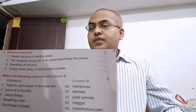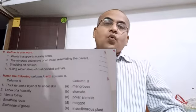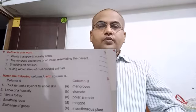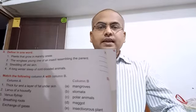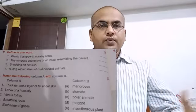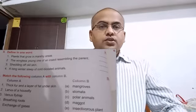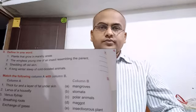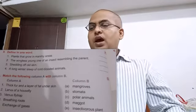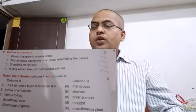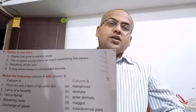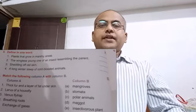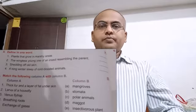Next question: Shedding of old skin. The nymph starts growing and shedding its old skin, and then it converts into the adult. This process of shedding of old skin is called molting. The next question: A long winter sleep of cold-blooded animals is called hibernation.